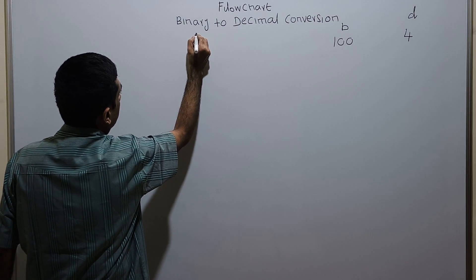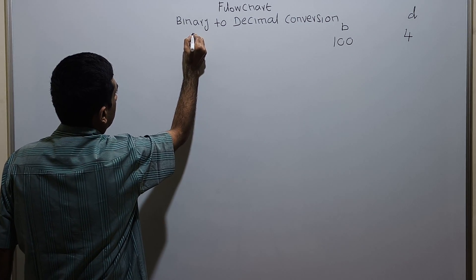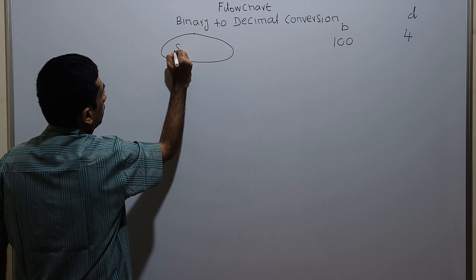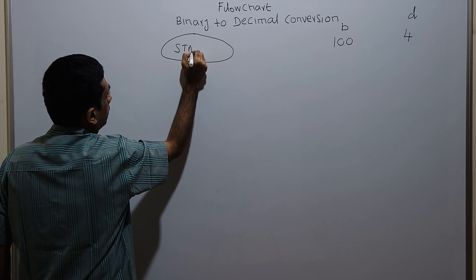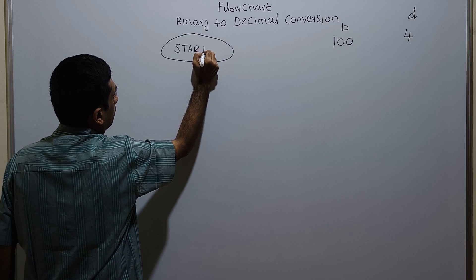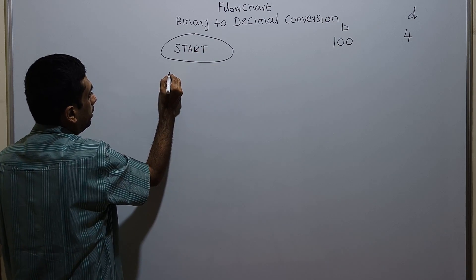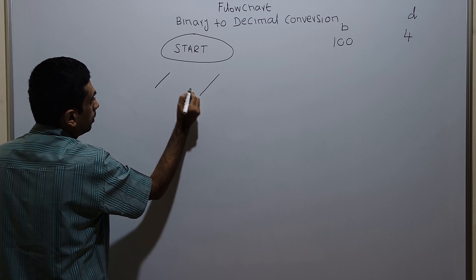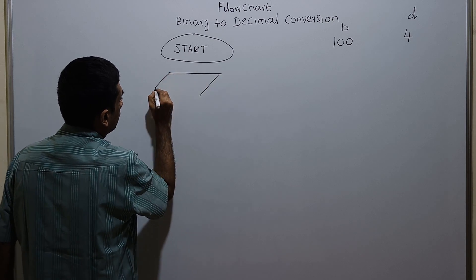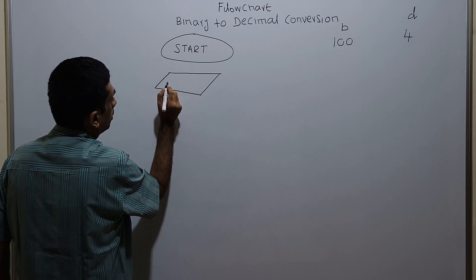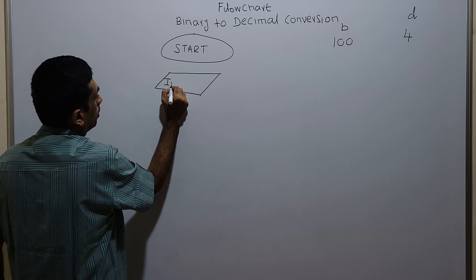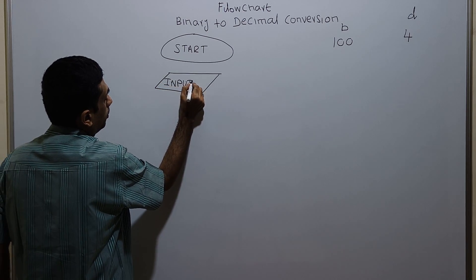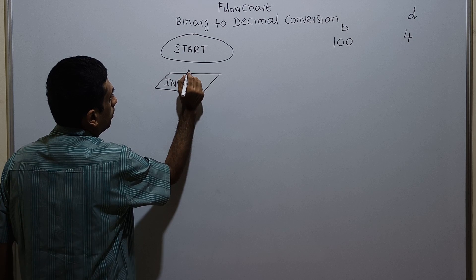This is the logical start of the flowchart. I am opening it. Input the binary number from the user — input B.